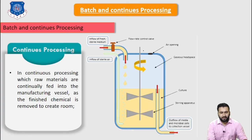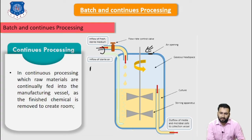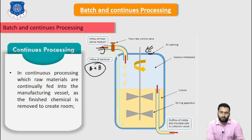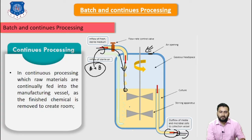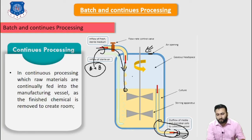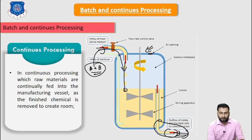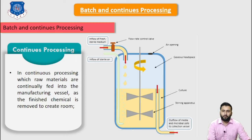To understand this, let's consider this figure. In this figure, we are going to continuously add reactant A plus B — taking the same example as the batch process. Here, we are continuously going to add A plus B, the reaction occurs, and we are continuously removing the product. We are continuously going to remove the product, so we can continuously add the reactant. Because if we remove the product from one side, it creates room for the added reactant. This type of process is known as a continuous process.